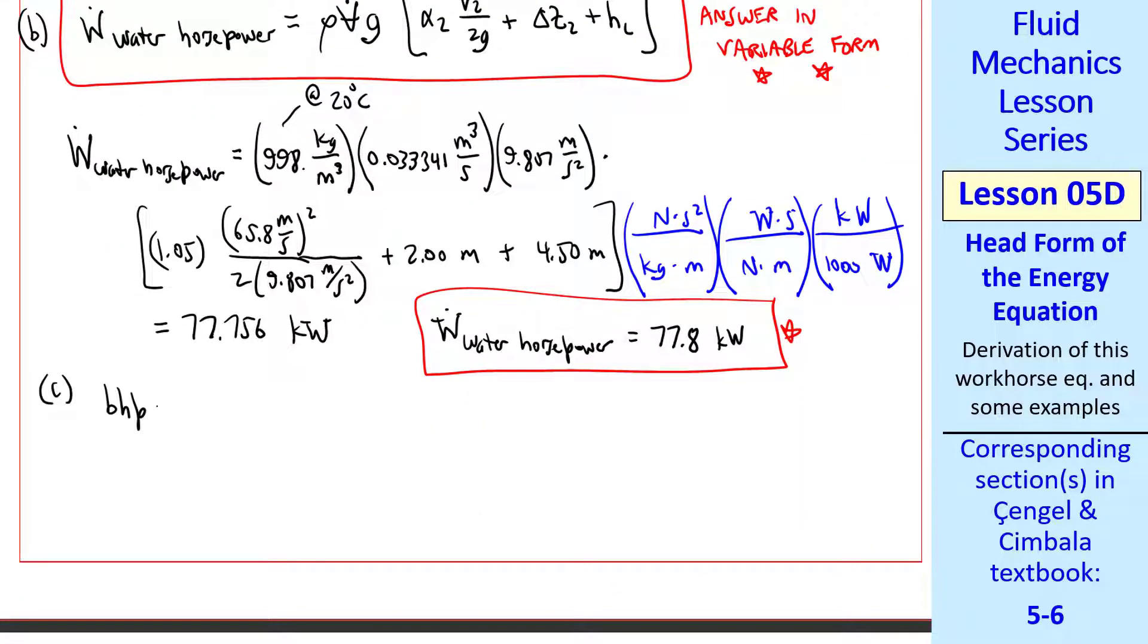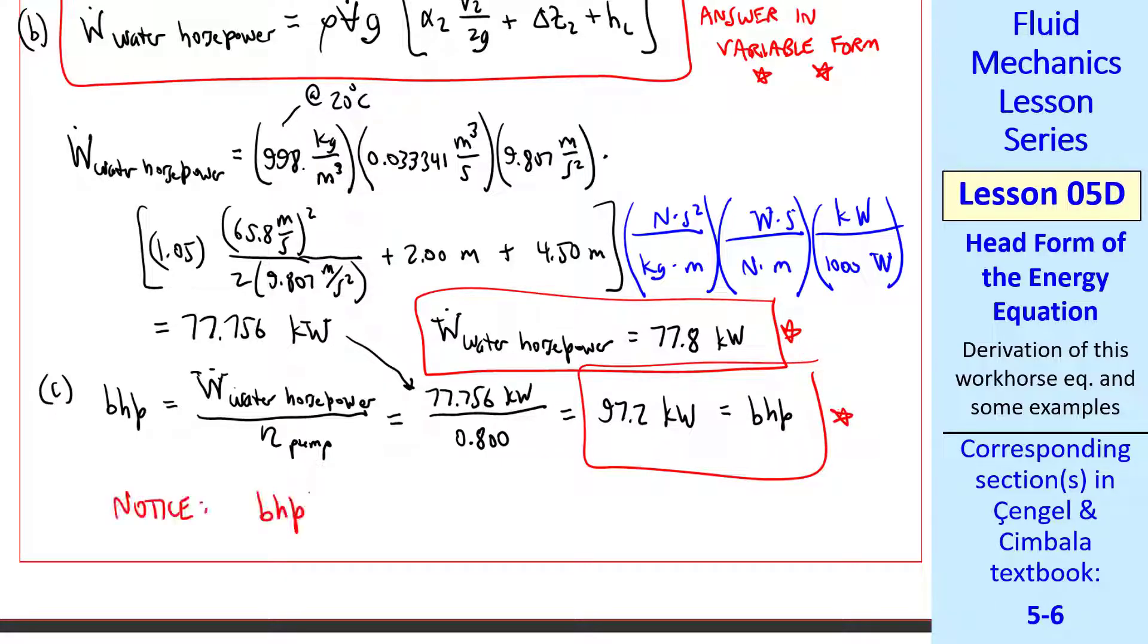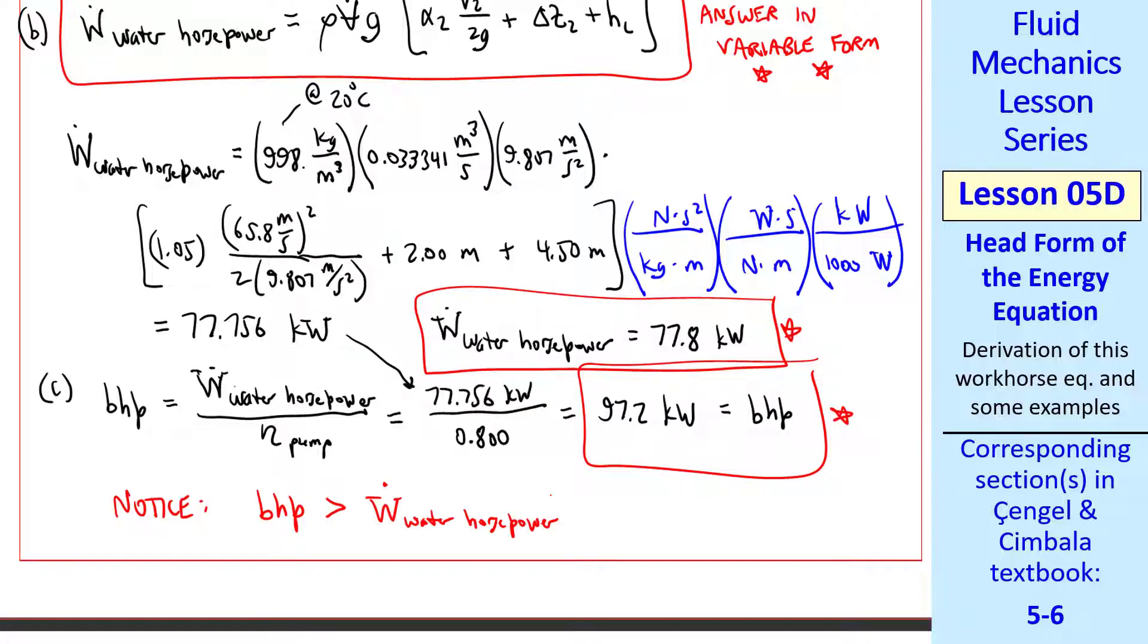Finally part C is to calculate the brake horsepower, which we abbreviate BHP, which by definition of the efficiency is the water horsepower divided by eta pump. So we use our water horsepower and the given efficiency, and we get 97.2 kilowatts as our brake horsepower. Notice that BHP, which is the actual shaft power supplied to the pump, is greater than the power supplied to the water, and that's due to pump inefficiencies.